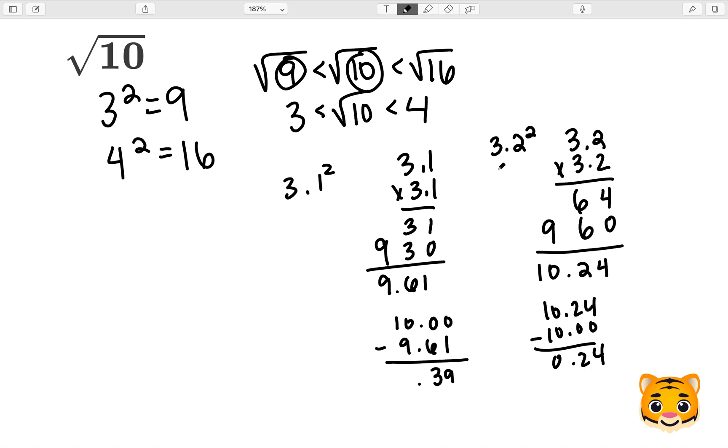So because of that, 3.2 is a better approximation. So now we can say the square root of 10 is approximately 3.2.